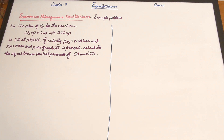First of all, as we learned, pure solids have a constant concentration, and because of that we will not be considering them for the value of Kp.